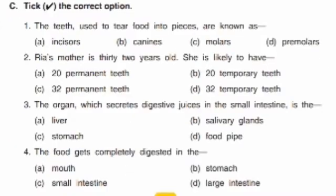Section C: take the correct option. One: teeth used to tear food into pieces are known as canines — the correct answer is B, canines. Second: Ria's mother is 32 years old.